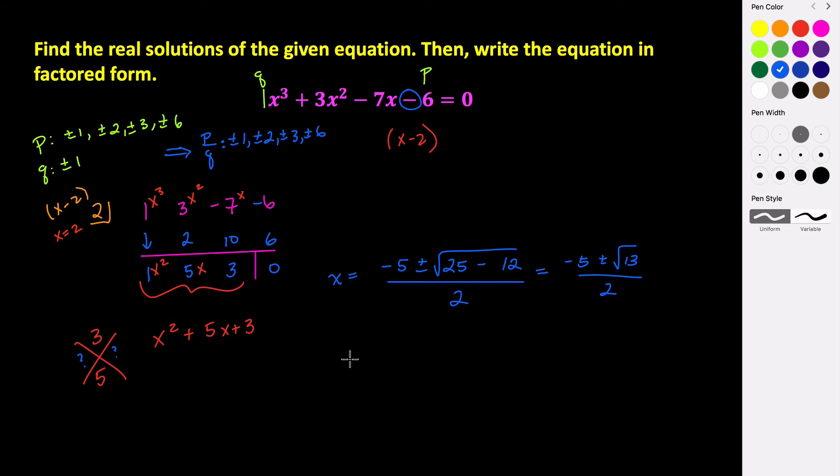So the other two zeros are x equals negative 5 plus the square root of 13 over 2. And x equals negative 5 minus the square root of 13 all over 2. So we have a zero here, a zero here, and then we found that this was a zero before. x equals 2. So those are all of our zeros.